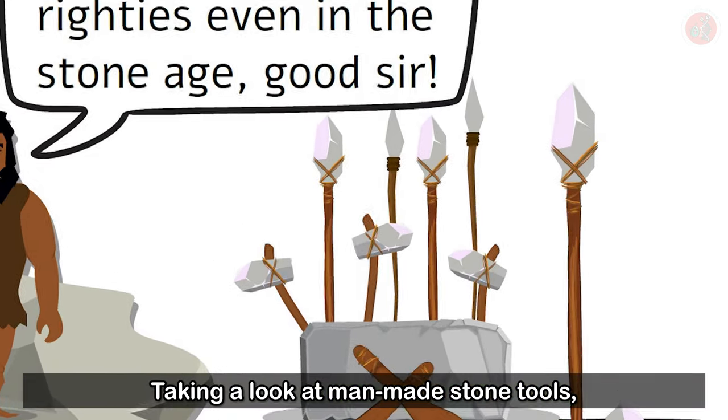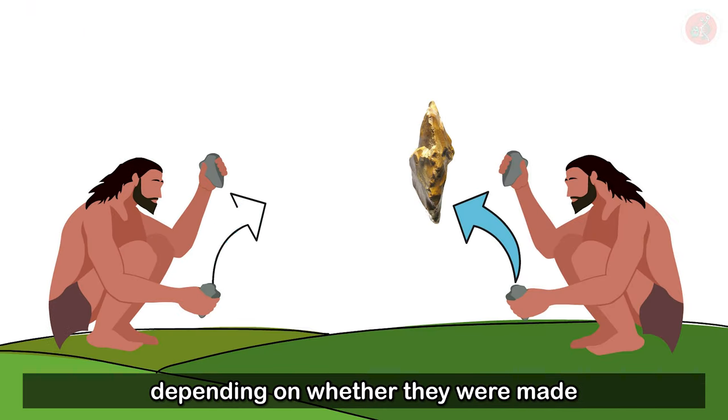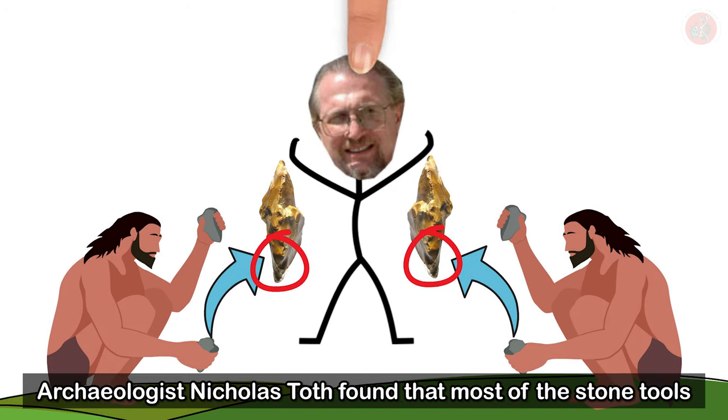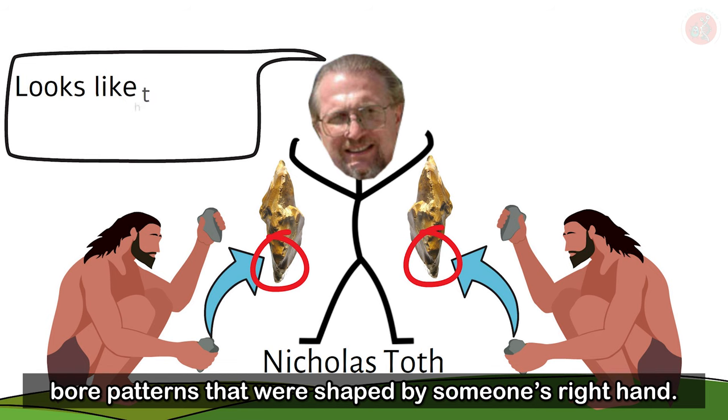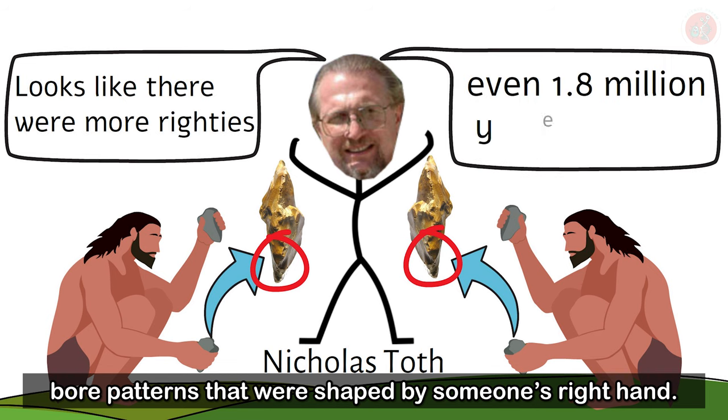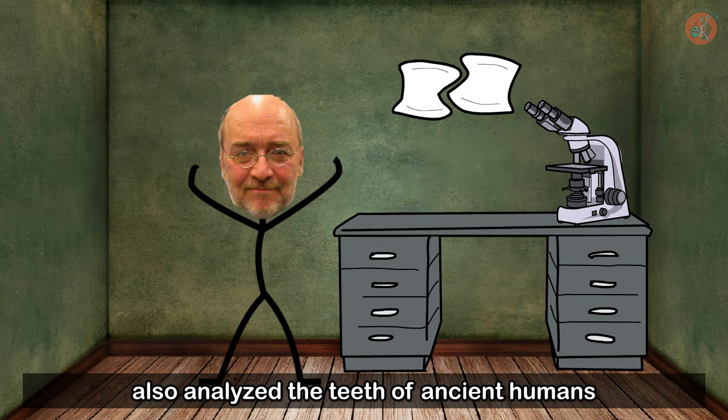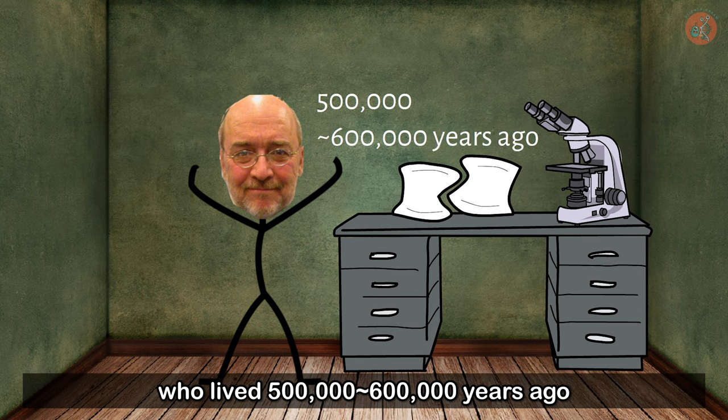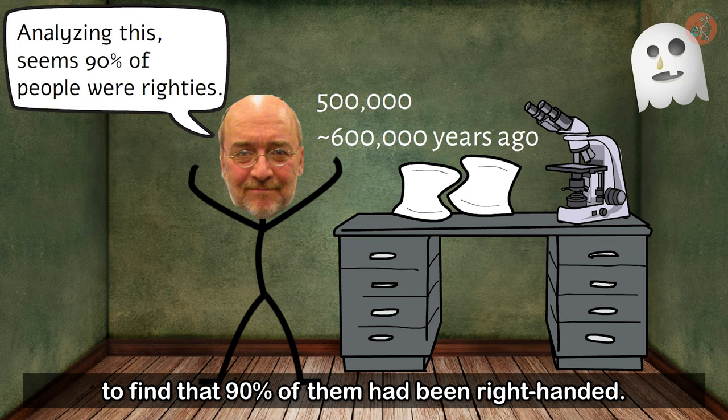Taking a look at man-made stone tools, we can see that the ends are shaped differently depending on whether they were made with someone's right hand or left hand. Archaeologist Nicholas Toth found that most of the stone tools we've discovered from 1.8 million years ago bore patterns that were shaped by someone's right hand.